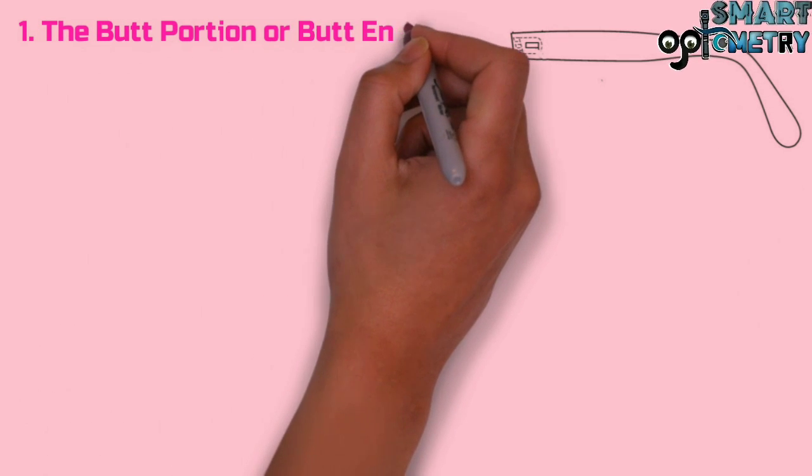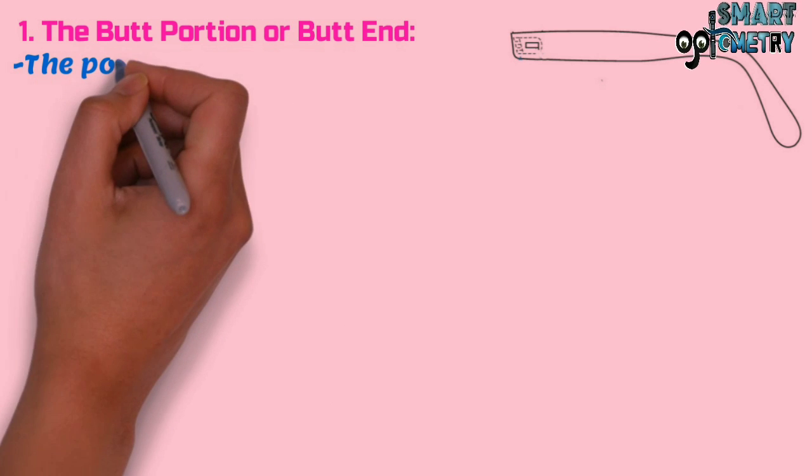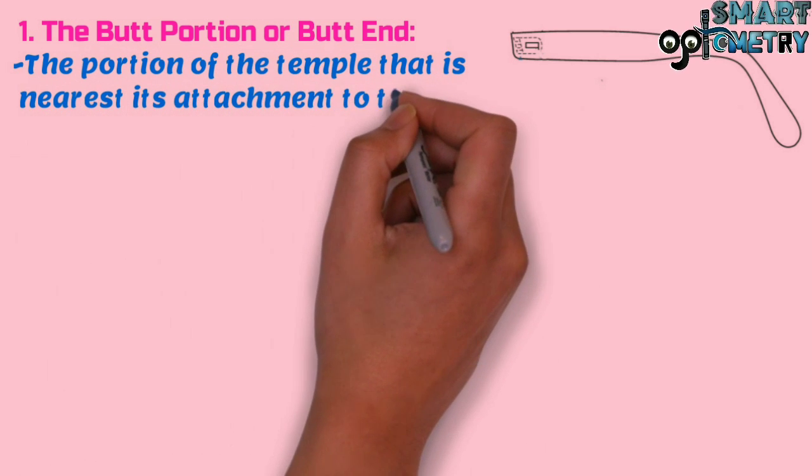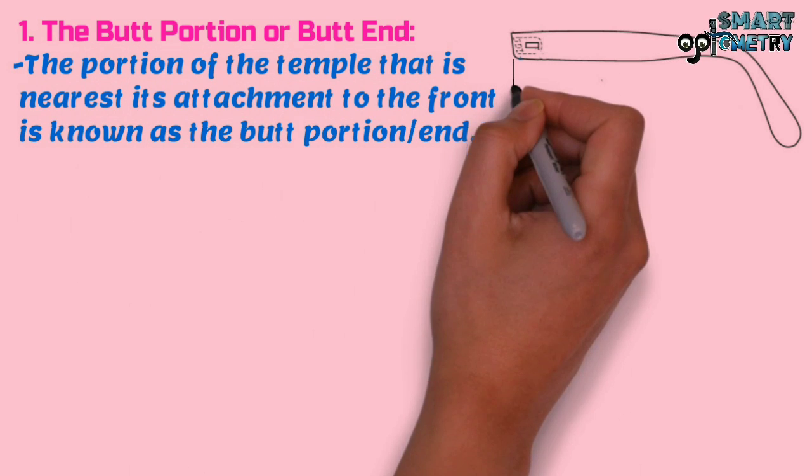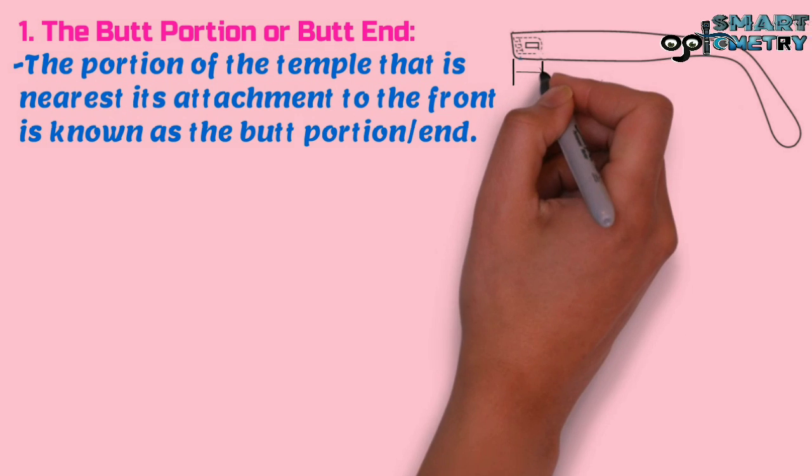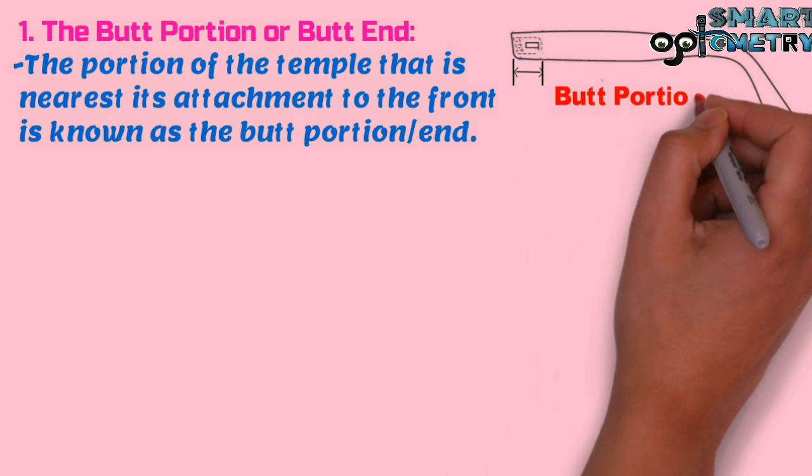One, the butt portion or butt end. The portion of the temple that is nearest its attachment to the front is known as the butt portion or butt end. Here in this figure you can see the butt portion.